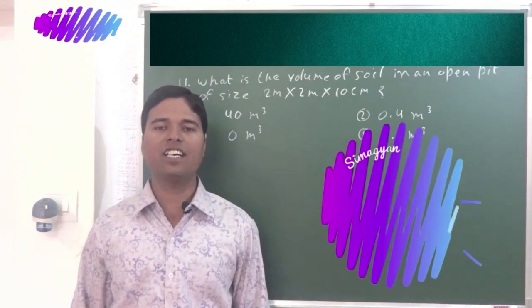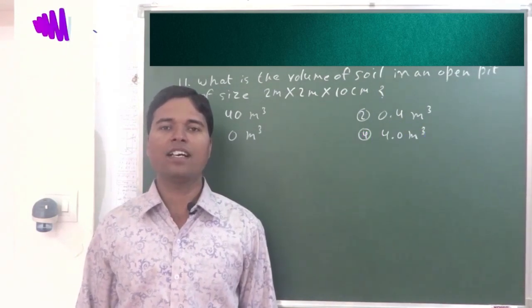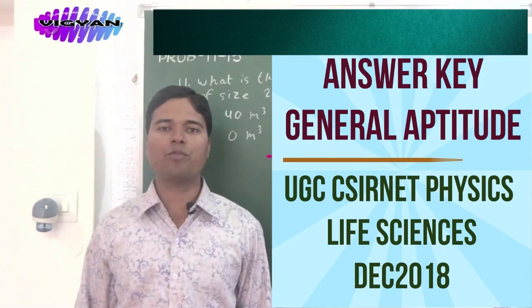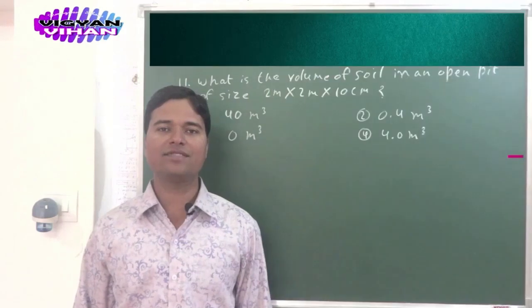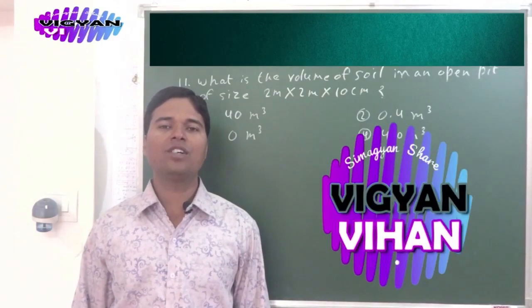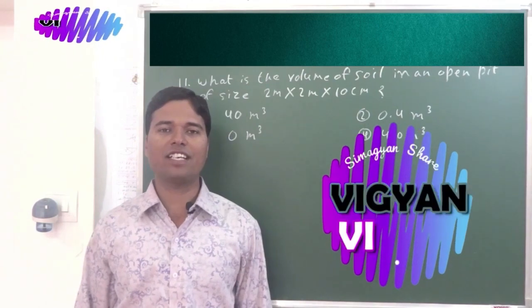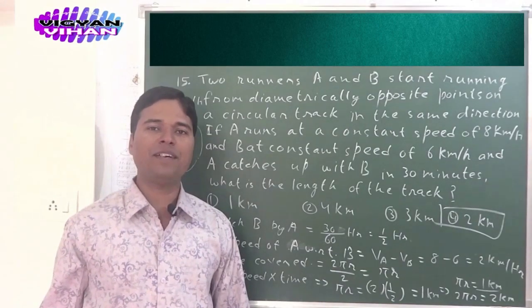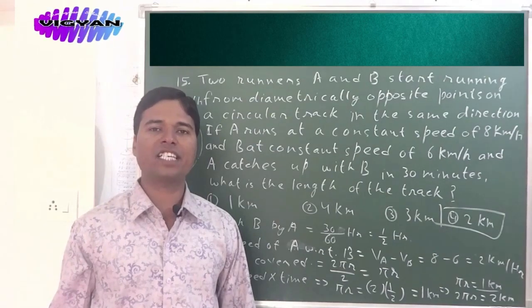This is our answer key for general aptitude part A of UGC CSIR net for December 2018 for physical sciences and life sciences. This will help you attempt general aptitude problems with efficiency and accuracy. You can download this paper along with its answer key from the Google Drive link given in the description below.